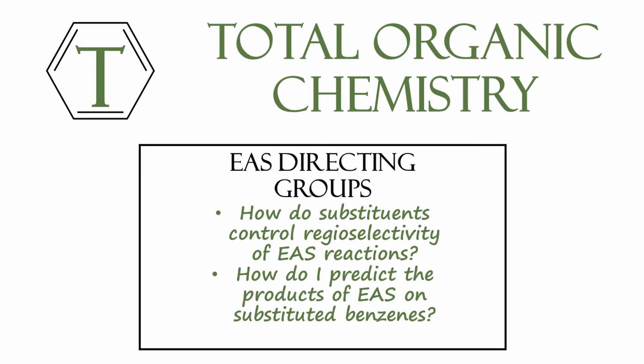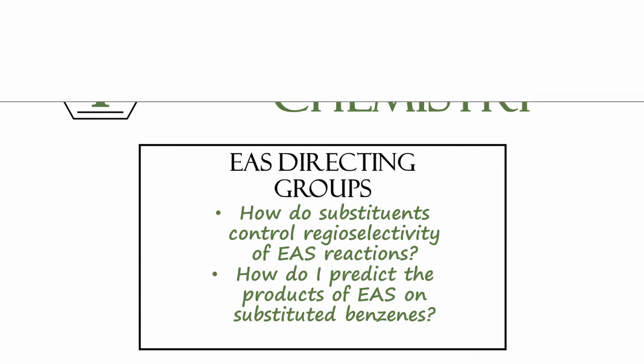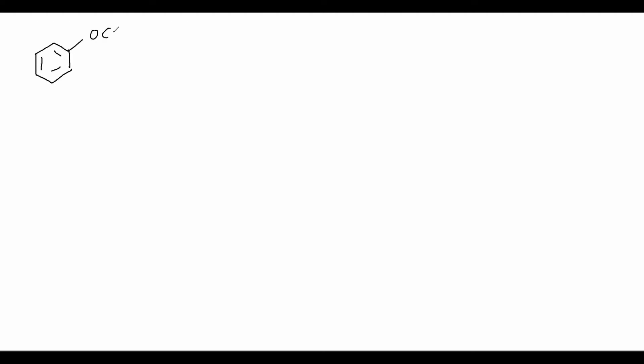If you need some review on electrophilic aromatic substitutions in general, please go ahead and subscribe and click on the video at the top of the screen. Up until now, we've only been talking about EAS reactions on just benzene without any substituents. But what if we want to perform a reaction on this compound, which is called anisole? We have the benzene ring here, and then we have a methoxy group on one of the carbons. So say we want to brominate this compound.